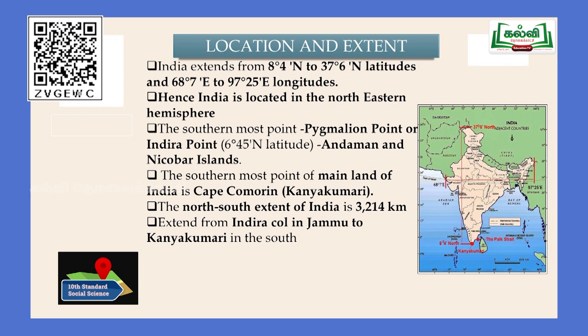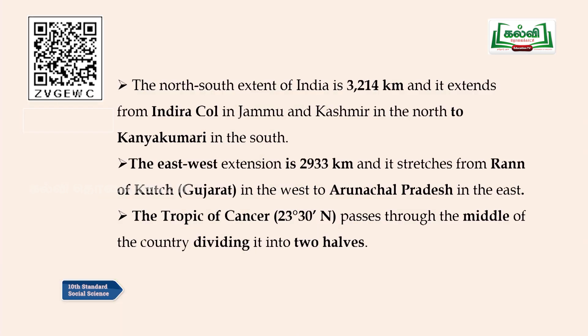The southernmost point of India is Pygmalion Point, also known as Indira Point, at 6 degrees 45 minutes north latitude, which lies in the Andaman and Nicobar Islands in the Bay of Bengal. The southernmost point of the mainland of India is Cape Comorin, which is also known as Kanya Kumari.